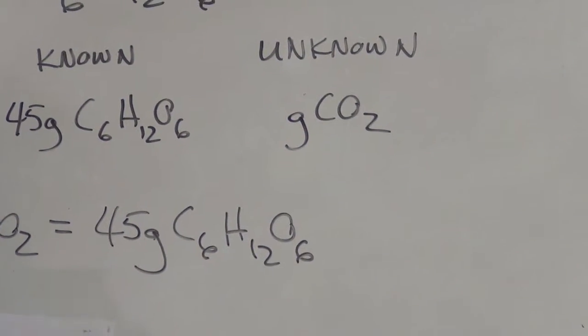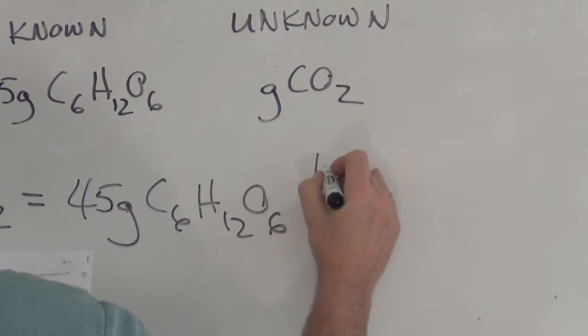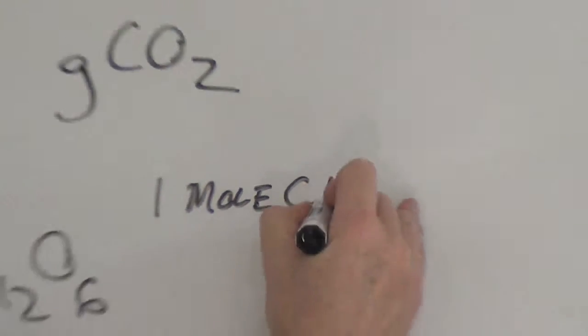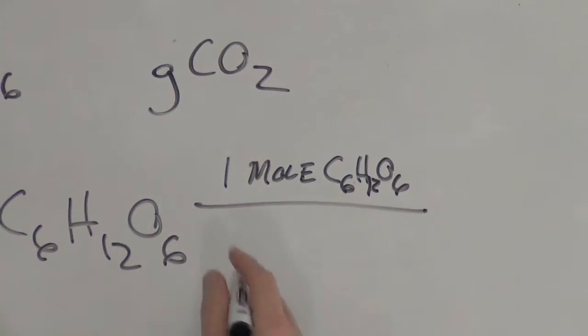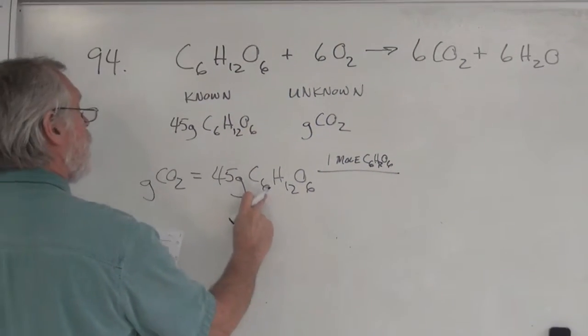So the first conversion factor is to get rid of the grams. So I'm going 1 mole of C6H12O6 divided by, and what is the mole mass for this? Well, there's 12.